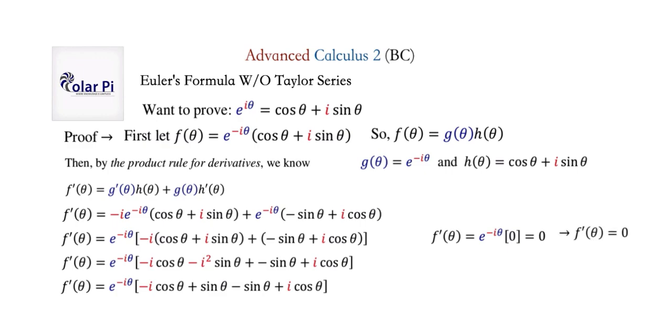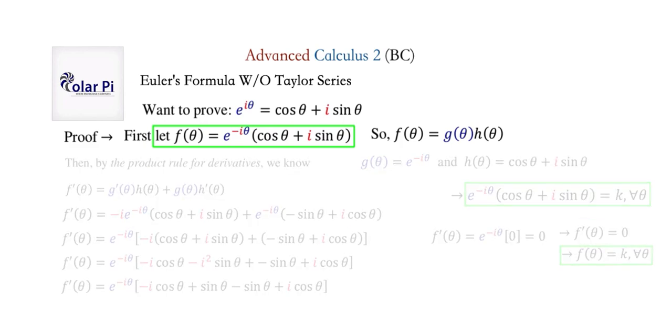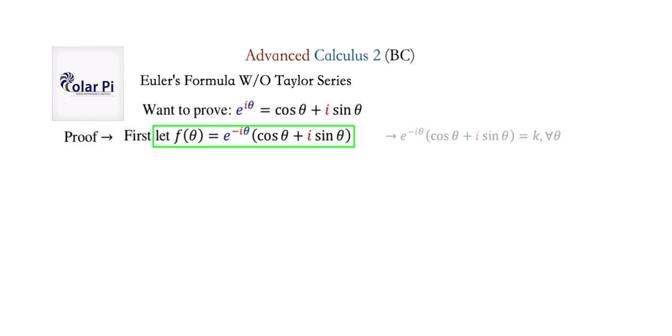But wait. If f prime of theta is equal to zero, that means that f of theta is equal to a constant for all theta. Regardless of what theta is, f of theta has to equal a constant because f prime of theta is equal to zero. Okay, cool. But wait. We said that f of theta is this. So, what we're saying is this here is equal to a constant k for all thetas. There. Let's spell it out. That's what we just said. In conclusion. All right. Where to from here? Well, we need some space, and I'll show you. This is pretty exciting.